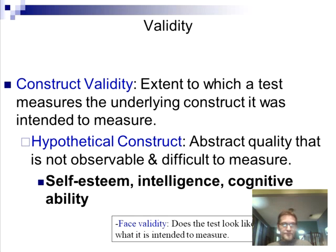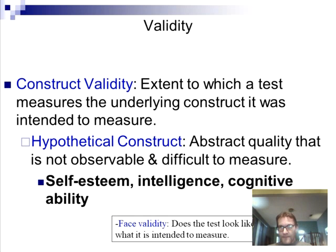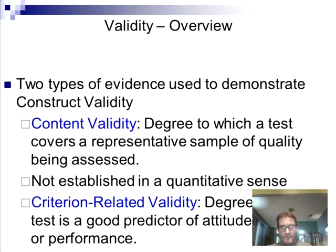Construct validity is the extent to which a test measures the underlying construct it was intended to measure. Remember, the construct was happiness and my test was smiles per hour. There are two main ways to demonstrate construct validity: content versus criterion.